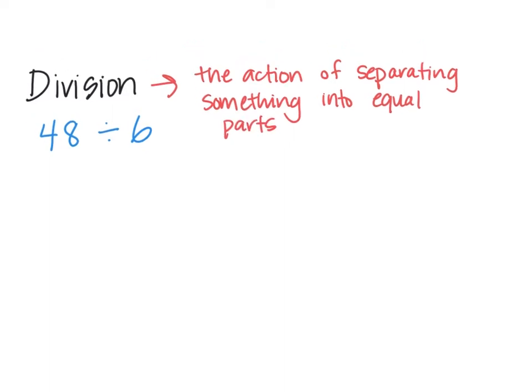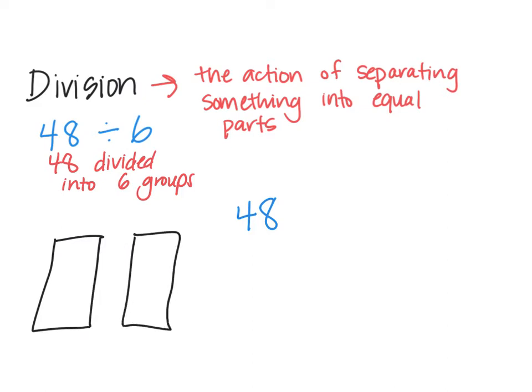So we're going to start with 48 divided by 6, and we're just going to show what that means with a picture. 48 divided by 6 means 48 divided into 6 groups. And in those 6 groups, we'll have an equal number in each group. So we have 48 here, and we have 6 groups, so we're going to put that 48 into 1, 2, 3, 4, 5, and 6.